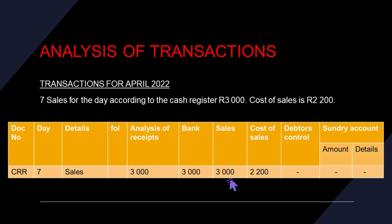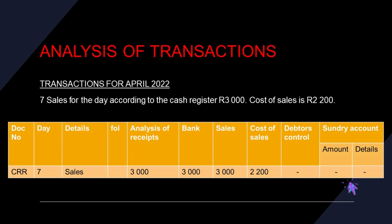This R3,000 is not saved yet, so we take it to the bank — R3,000. This R3,000 was for sales. Do we have a column for sales? Yes, we have a column for sales, so we record R3,000 there. They also gave us cost of sales — R2,200 — so we go to the cost of sales column and record R2,200. We did not receive any money from debtors. Since we have a column for sales, there is no need to record anything in the sundry account.